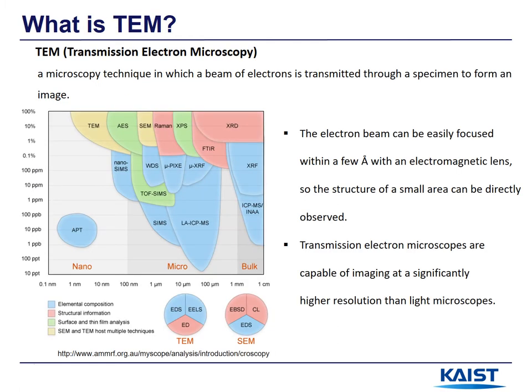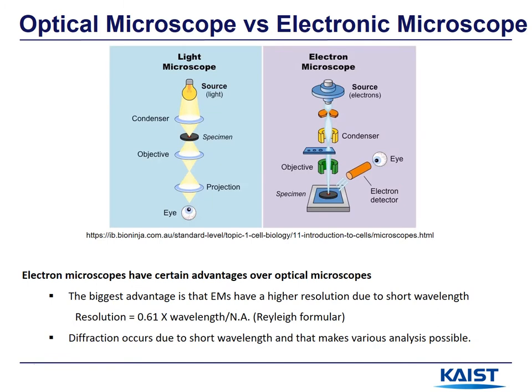Let's start from the introduction. TEM uses an electron beam as a visible source and the electron is transmitted through the specimen. Here is an image about the resolution of various analysis techniques. The quantitative resolution of TEM is not the best, but TEM can observe very small dimensions within a few angstroms. Here is a contrast between the optical microscope and the electron microscope. Electronic microscopes have high resolution due to short wavelengths, as well defined in the Rayleigh formula.